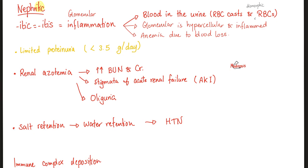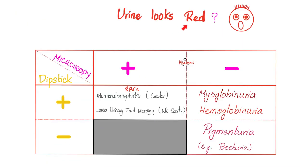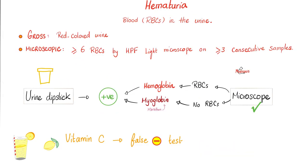Unlike nephrotic syndrome, in nephritic you could have renal azotemia — this is acute renal failure. When the kidney is impaired, it cannot secrete salt, so you get salt and water retention. That's why you have hypertension and jugular venous distension with increased central venous pressure. Many nephritic syndromes have immune complex depositions. In IgA nephropathy, you have immune complex depositions in the mesangial cells of the glomeruli. Just because urine is dark doesn't mean it has blood — it could be myoglobin or hemoglobin. Diagnosis is made when you have more than 6 red blood cells per high power field under light microscopy. Beware: vitamin C interferes with the test results.